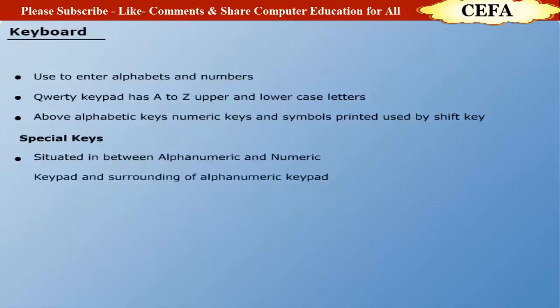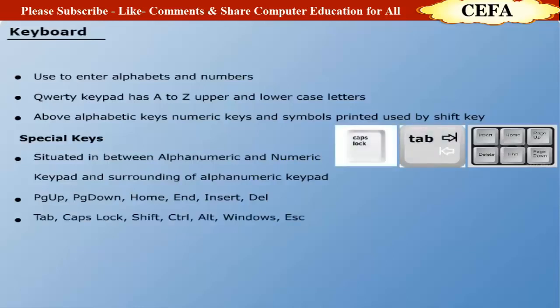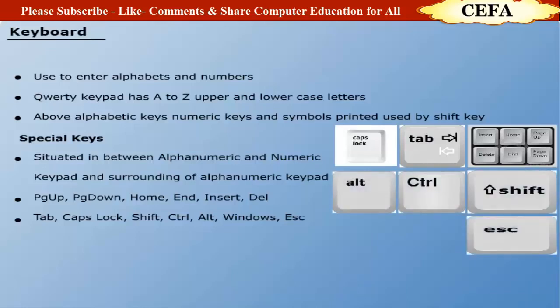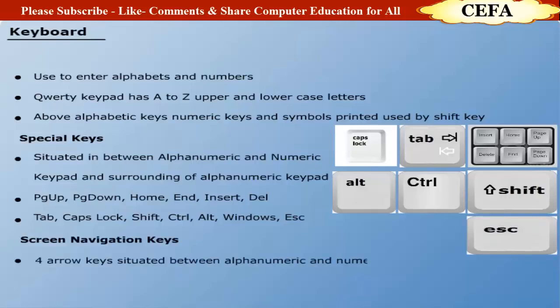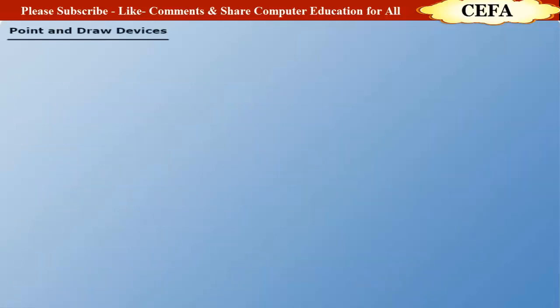Special keys are situated between the alphanumeric and numeric keypad and also surround the alphanumeric keypad. These include page up, page down, home, end, insert, delete, tab, caps lock, shift, control, alt, windows, escape, etc. Screen navigation keys, also called arrow keys, are situated between the alphanumeric and numeric keypad. There are four arrow keys: left, right, up and down, used to move the cursor anywhere on the screen.